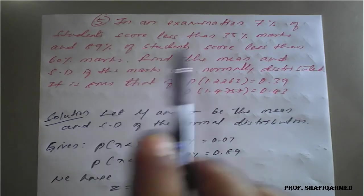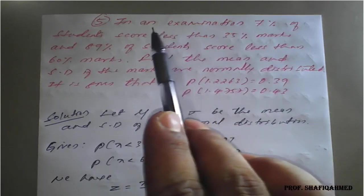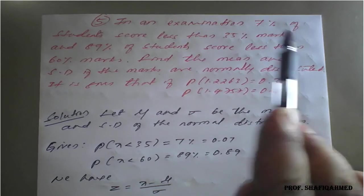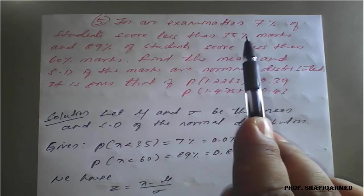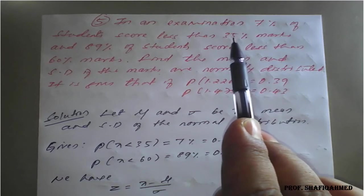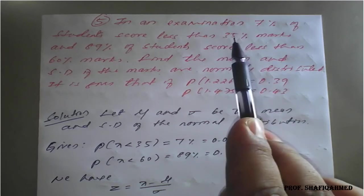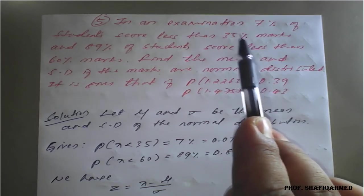So what they have given? In examination, 7% of the students score less than 35 marks. Means out of 100, they will score 35. So don't consider this 35%.